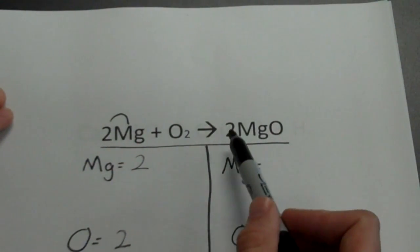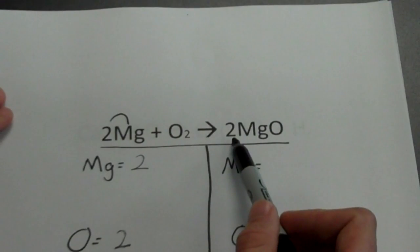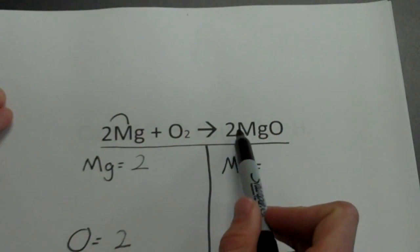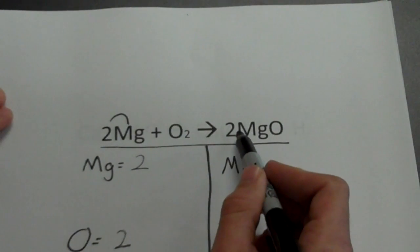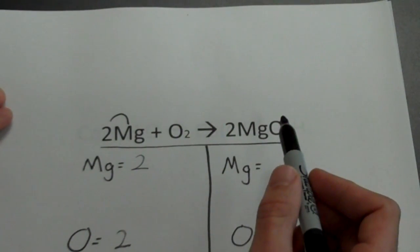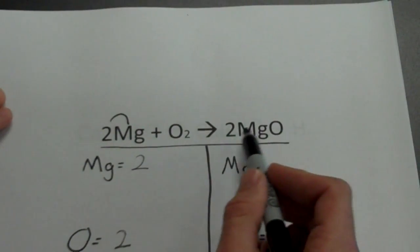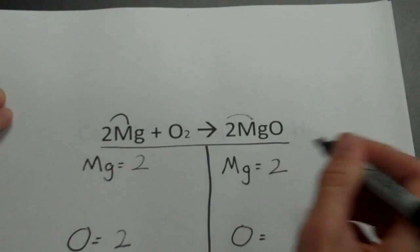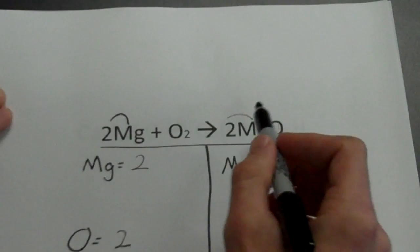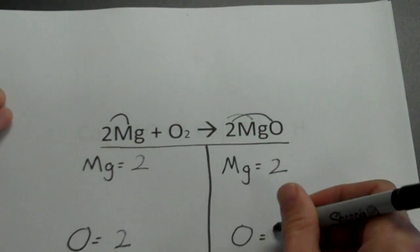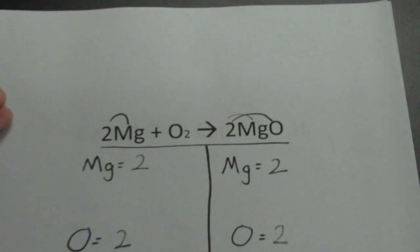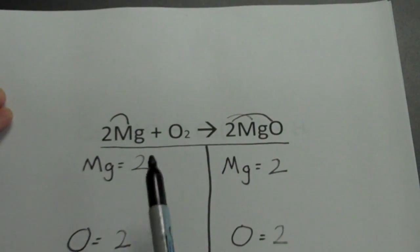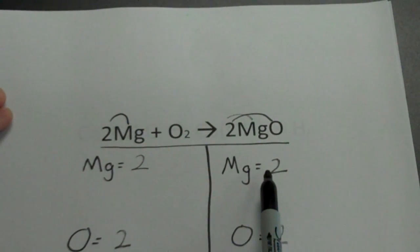Looking at my magnesium on the product side, I have a coefficient of 2, and it applies to the entire formula. So, like the distributive property in math, the 2 carries through all the way — it applies to magnesium, giving us 2 magnesiums, and the 2 carries over to the oxygen, giving us 2 oxygens. So we have 2 magnesiums on the reactant and 2 on the product, 2 oxygens on the reactant and 2 on the product.